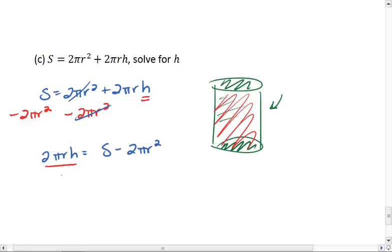And now we can divide both sides by 2 pi R. We're left with H equals S minus 2 pi R squared all over 2 pi R.